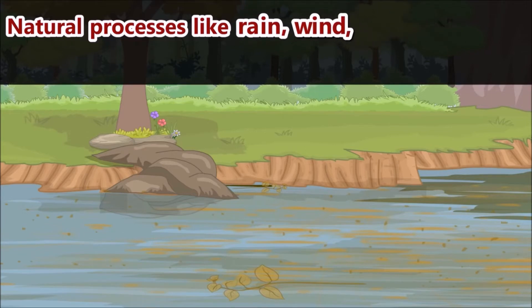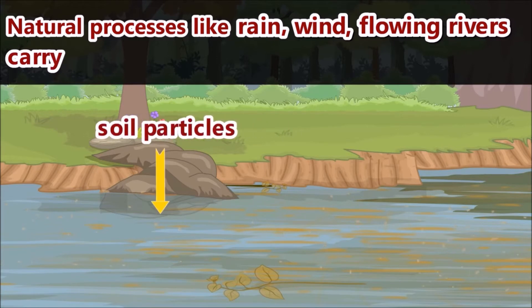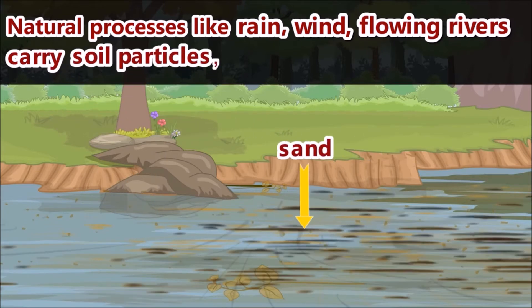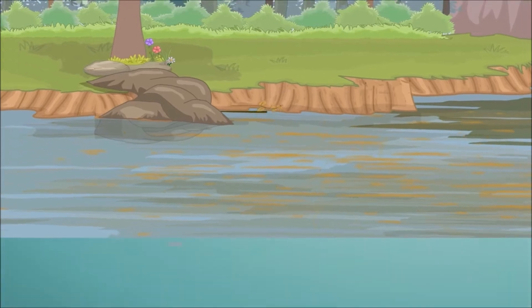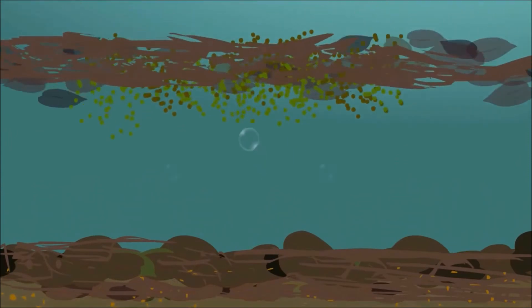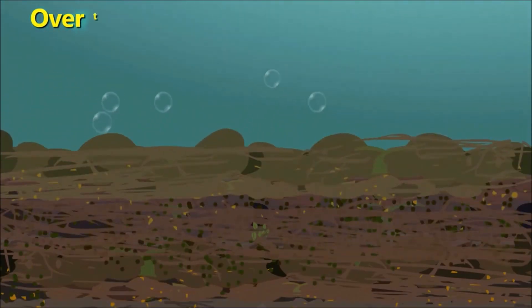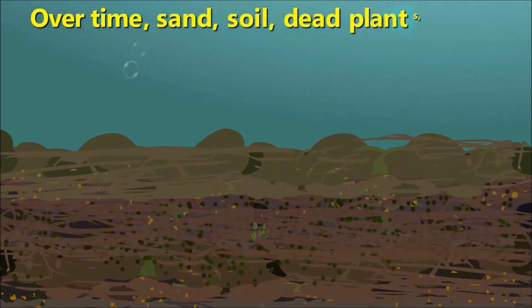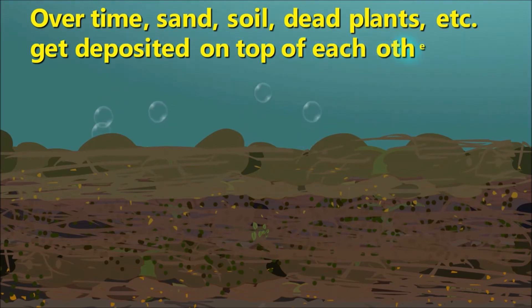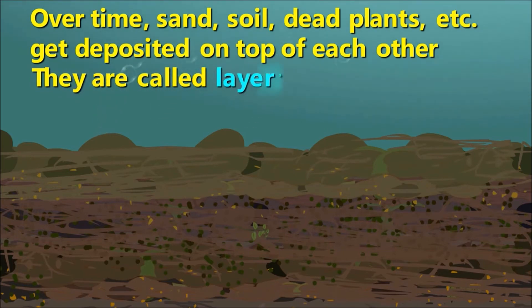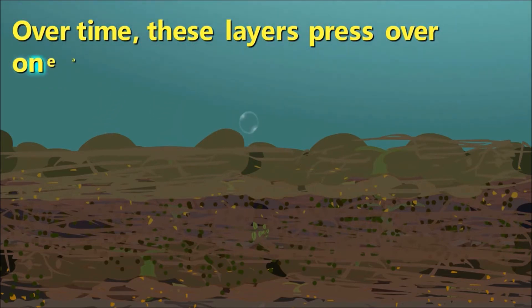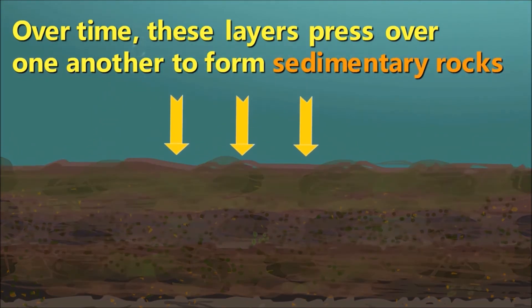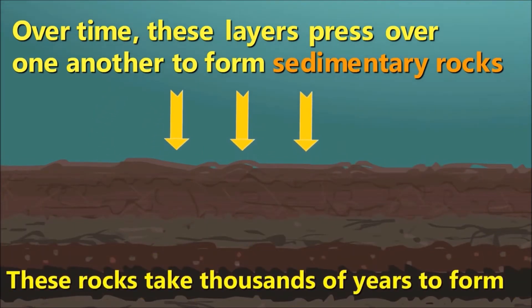Natural processes like rain, wind, and flowing rivers sometimes carry small particles of soil, sand, and dead plants. Over time, sand, soil, dead plants, and other particles get deposited on top of each other, forming a layer called a layer of sediments. Over time, these layers press over each other to form a hard substance called sedimentary rock. This rock takes thousands of years to form.